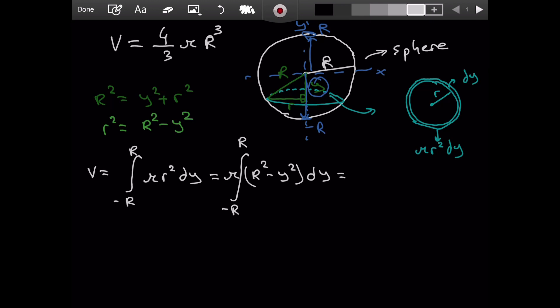We are allowed to break this integral into two integrals. Let's do that. So, if we do it, we will have pi, the integral negative r to r, r squared dy minus integral negative r, r, y squared dy.